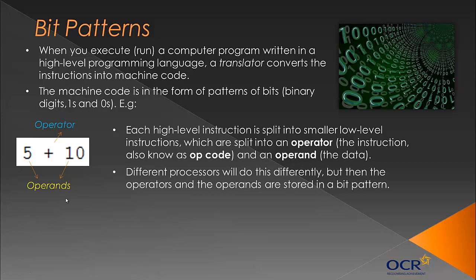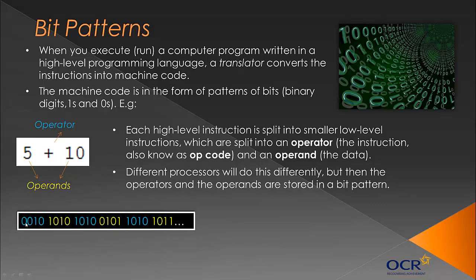Different processors handle this differently — an Intel and an AMD processor would likely do it quite differently, but the same principle applies. Each operator and operand is represented and stored as a bit pattern of ones and zeros. For example, if we use a nibble (4 bits) to represent each operator and operand — though this wouldn't actually work as it wouldn't provide enough combinations — 0010 (which is 2 in binary) might represent 'add', with subsequent nibbles representing 10, 2, and 5. This is illustrative; I've made up the specific values.